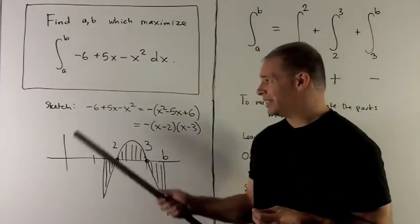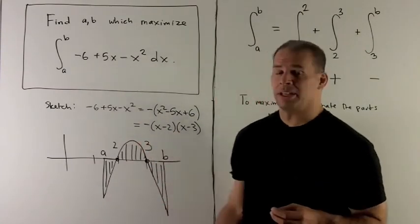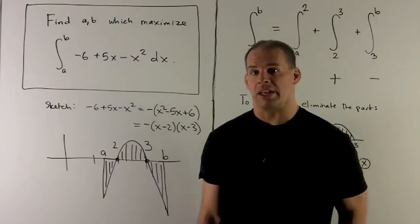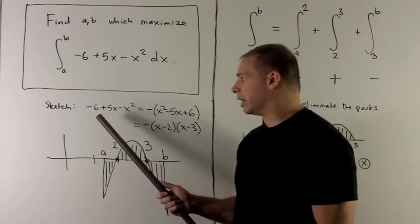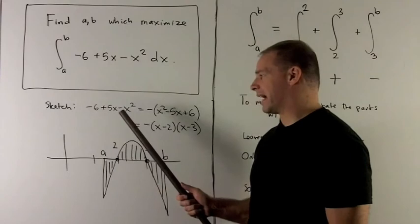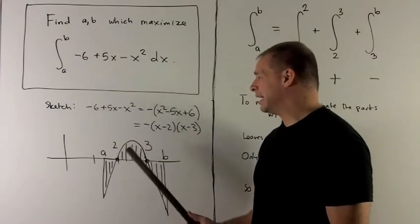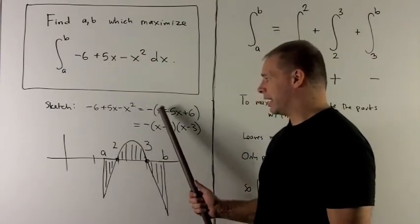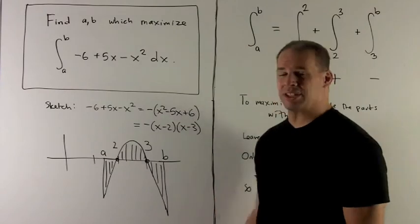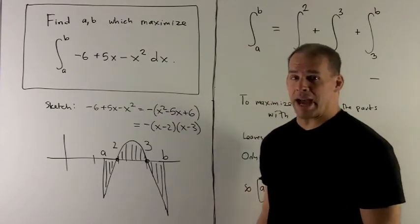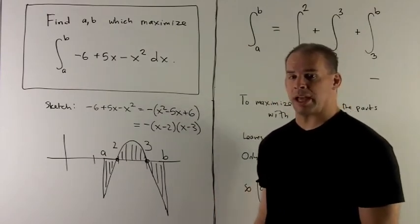What I want to do first is sketch a function to get an idea of what the graph looks like. So here, we're looking at minus 6 plus 5x minus x squared. This is equal to minus x squared plus 5x minus 6. That I can factor into minus (x minus 2)(x minus 3).